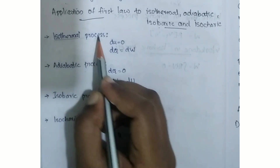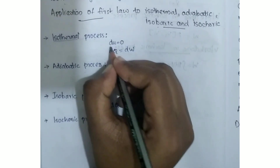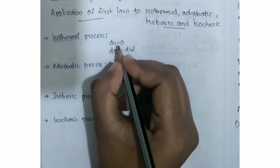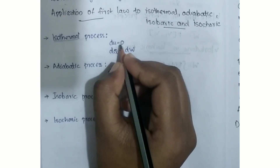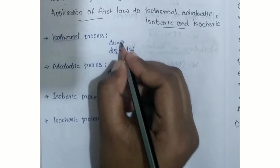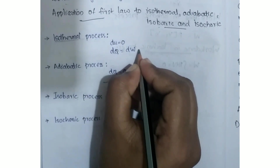In the first law of thermodynamics applied to the isothermal process, dU is equal to zero because the internal energy is equal to zero. Therefore, dQ is equal to dW.